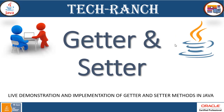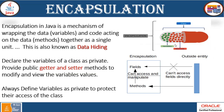Today we are going to present a live demonstration and implementation of Getter and Setter methods in Java. Before we get into the Getter and Setter, let's first see what is actually encapsulation. Getter and Setter methods implementation is one of the features of encapsulation, which is a mechanism of wrapping the data variables and code acting on the data methods together as a single unit. This is also known as data hiding.